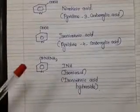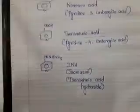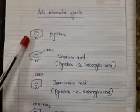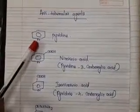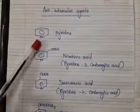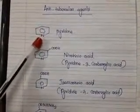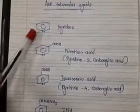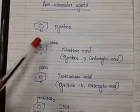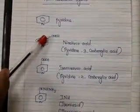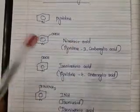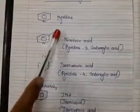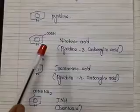Before seeing the structure of INH, first we will see what is pyridine. Pyridine is a six-membered ring having one nitrogen atom — a six-membered ring with one heteroatom that is nitrogen. When that ring has a carboxylic acid group in the third position, it can be called nicotinic acid, or chemically pyridine-3-carboxylic acid.